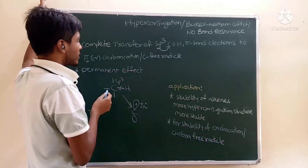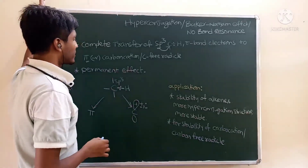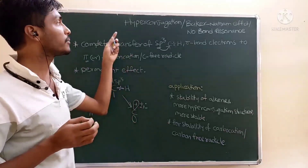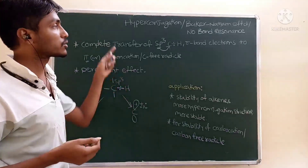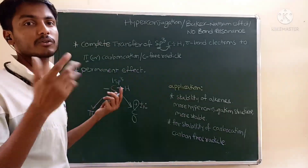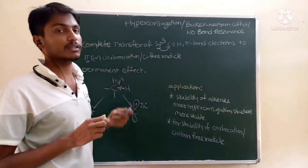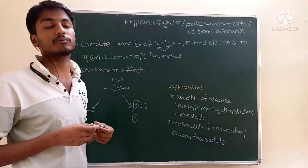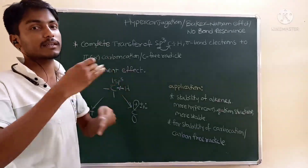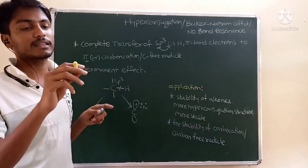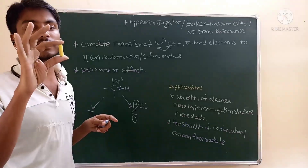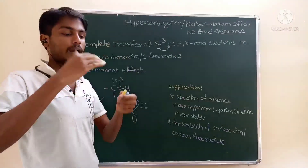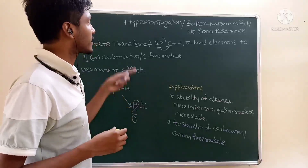This effect is a permanent effect — very important. Inductive effect, mesomeric effect, and hyperconjugation are all permanent effects, continuously operating in a molecule. Whenever hyperconjugation is possible, the molecule is always in dynamic motion, meaning hyperconjugation is happening continuously in that molecule.